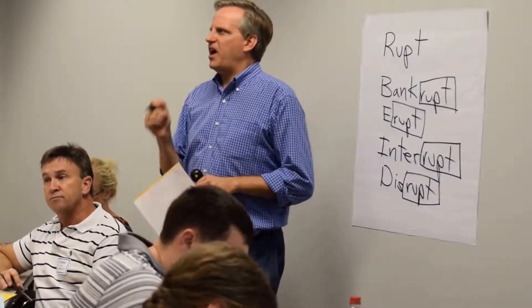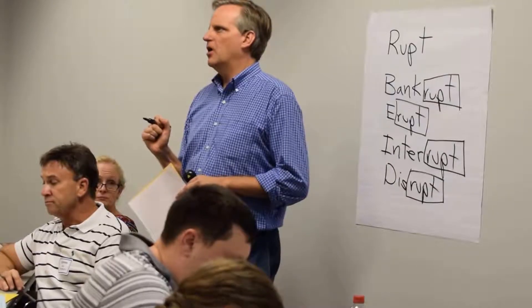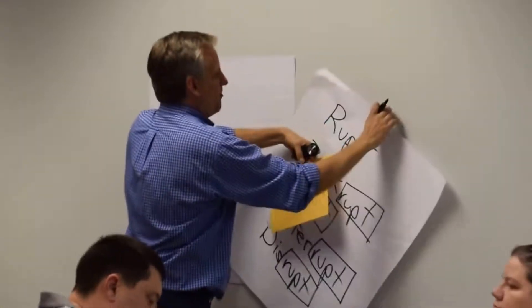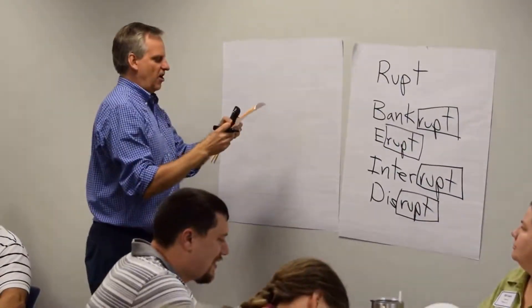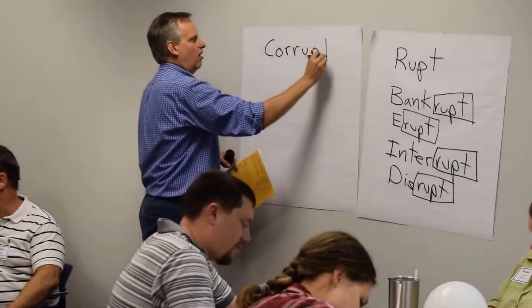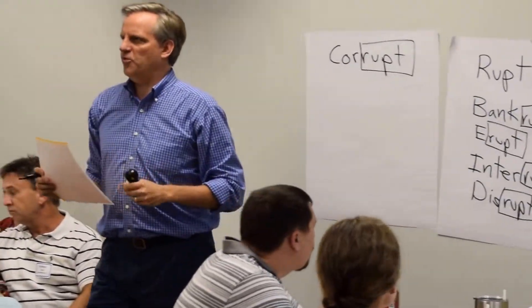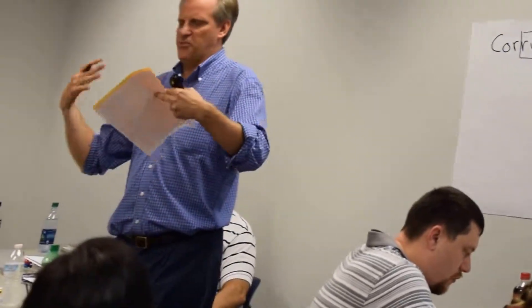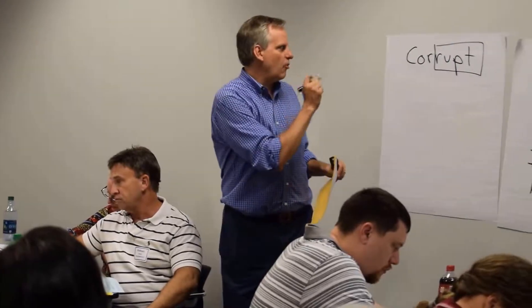So we have other examples of words where we see 'rupt.' Where can we think of some? 'Corrupt' — that's a good one, especially as we're talking about politics. What does 'corrupt' mean? We can say somebody's honesty was broken. You might also see it with a computer: you put a flash drive in and it says this file is corrupt — that medium is broken and you can't use it. The ability to use that has been broken.